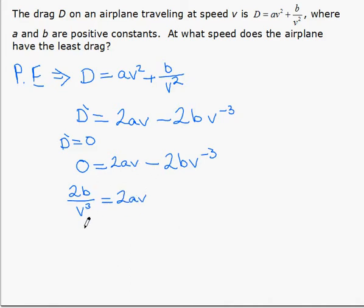Cross multiplying gives us 2av to the 4 equal to 2b. The 2s can cancel or we can divide each side by 2. The a comes over and we take the fourth root to find the velocity. So the speed at which drag is minimized is the fourth root of b over a.